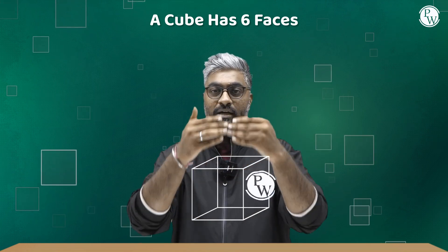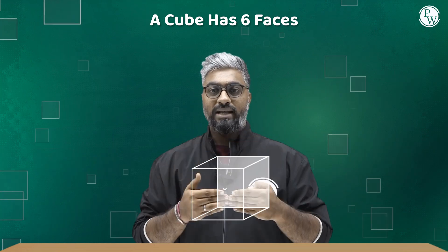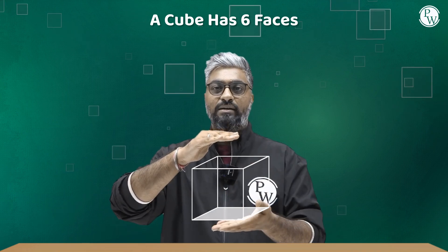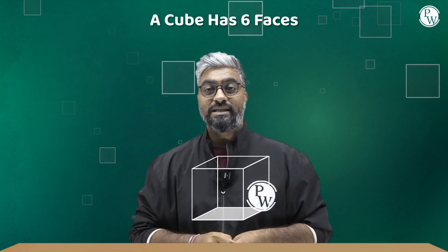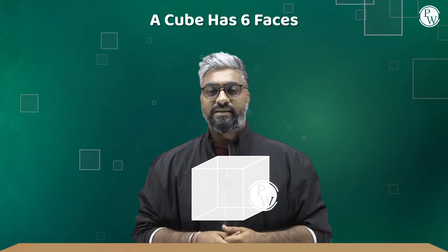Let's start with a simple concept like a cube. We know that a cube has six faces — one at the front, one at the back, two on the sides, one on the top and one at the bottom. So this gives us six faces.